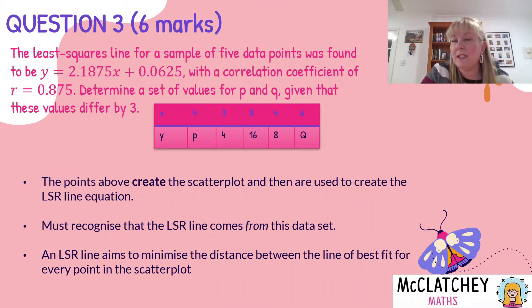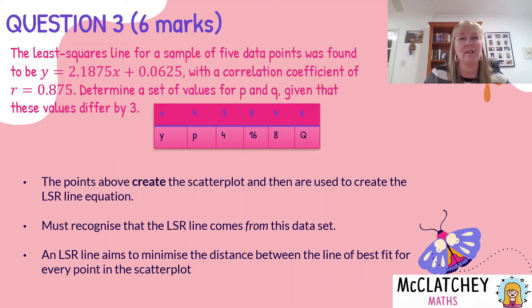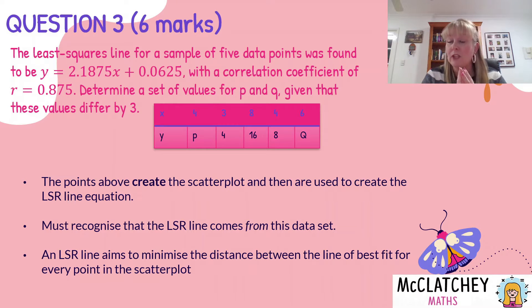The purpose of a least squares regression line is that it's a mathematical way of finding a line of best fit — it minimizes the distance between each of those points on the scatter plot and the line of best fit. That line is created mathematically using a formula which is on your formula sheet. So understanding that we got that equation using formulas is really critical. The equation comes from the data set, not the data set from the equation, and the equation comes from formulas.